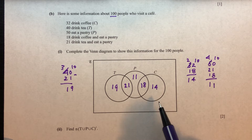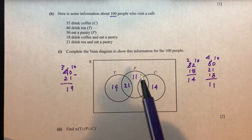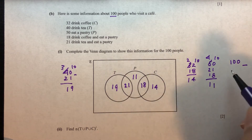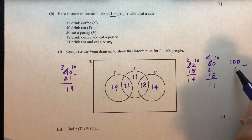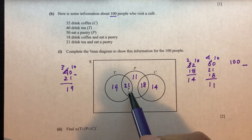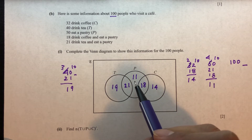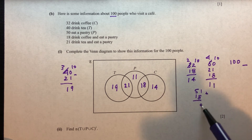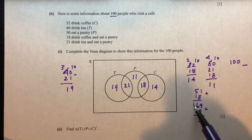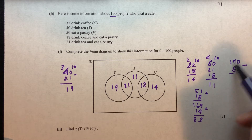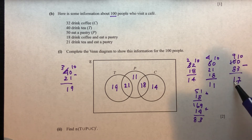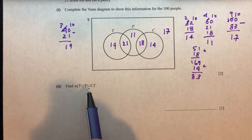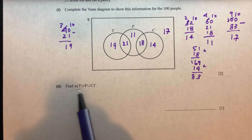We also need the people outside all sets — those who don't drink coffee, don't eat pastry, and don't drink tea. Everything inside = 19 plus 21 plus 11 plus 18 plus 14 = 83. So 100 minus 83 = 17 are outside. Therefore N(T union P union C)' = 17.